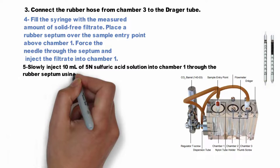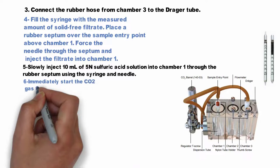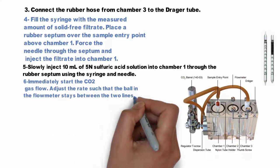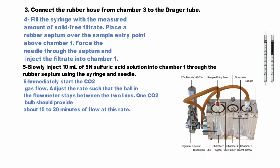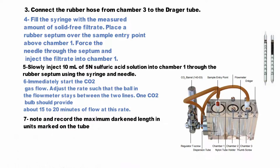Immediately start bubbling the CO2 gas flow. Adjust the rate such that the ball in the flow meter stays between the two lines. Each CO2 bulb should provide about 15 to 20 minutes of flow at this rate. Note and record the maximum darkening length, then use the equation below to calculate the sulfide concentration in milligrams per liter.